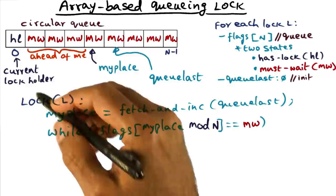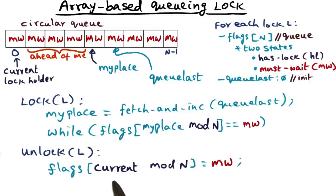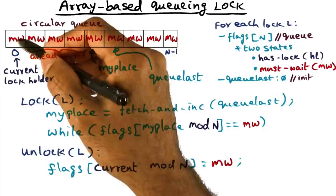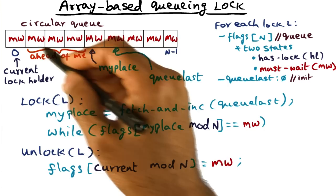So let's see what happens when the current lock holder comes around to unlocking the lock. What he's going to do is execute the unlock algorithm. And the unlock algorithm, the first thing that it does is it sets this position that the lock holder had from HL to MW.